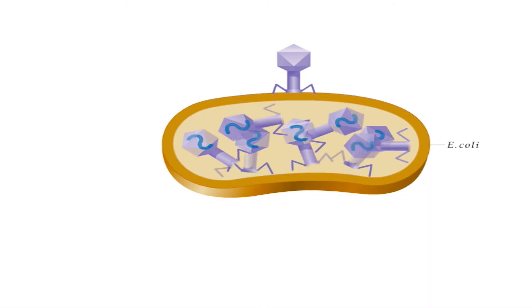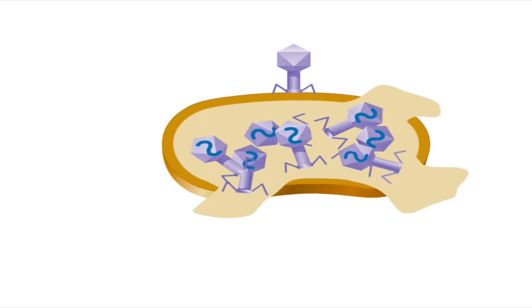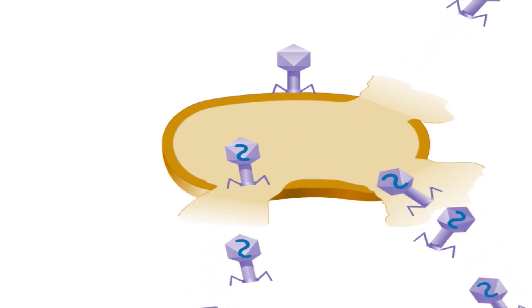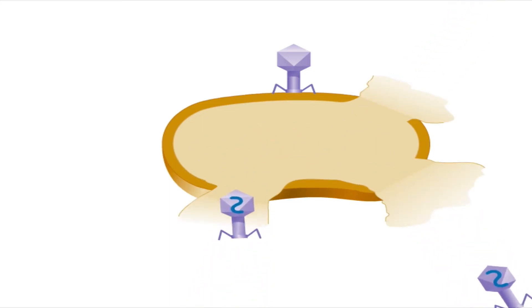When the life cycle is complete, 100 to 200 progeny phages have been assembled inside each bacterium. The bacterium breaks open, or lyses, and the phages are released.